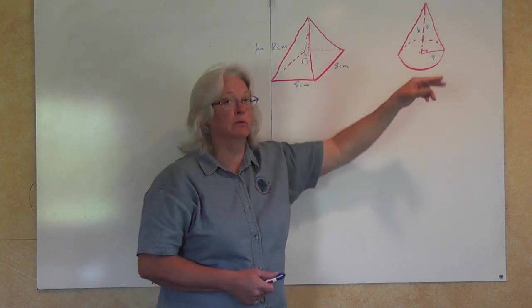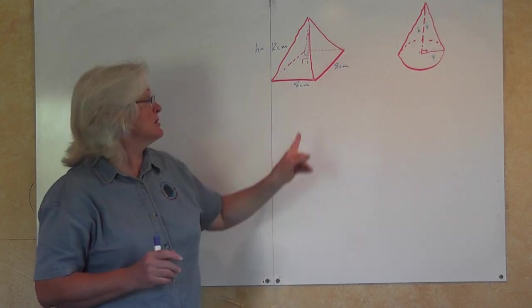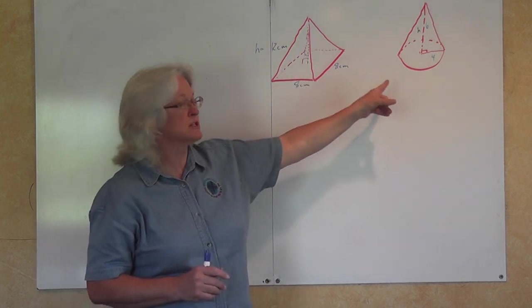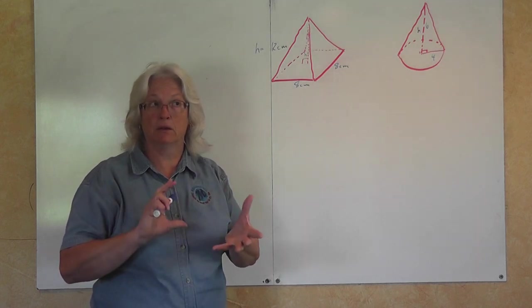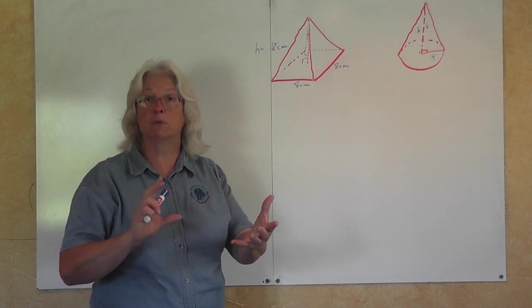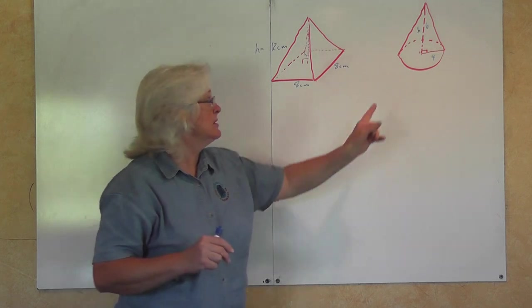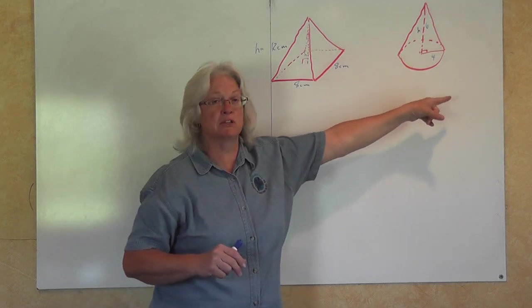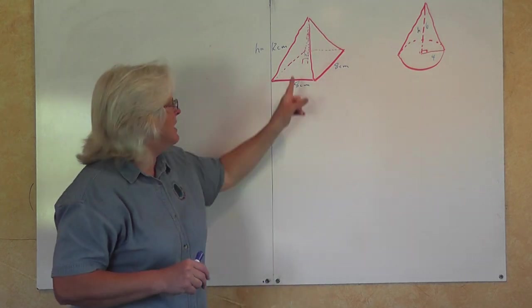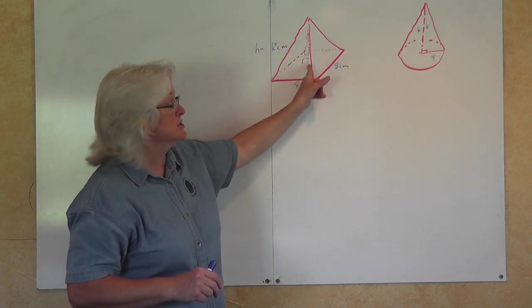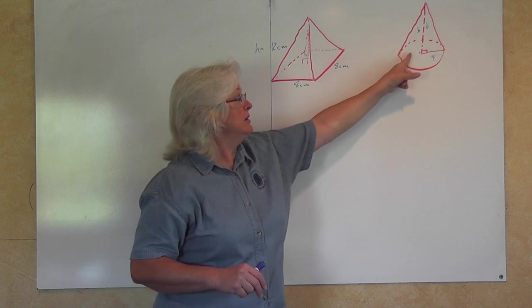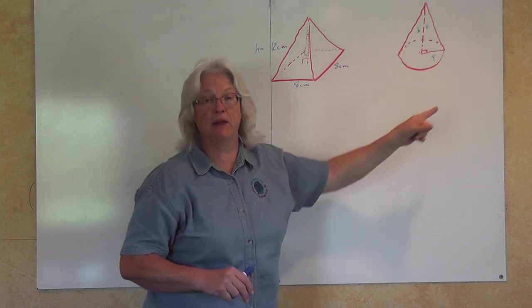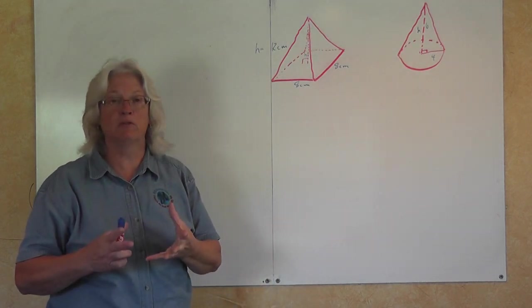So the base of a cone is a circle. You reach down and pull up from the very center of that to the top point. And that's what you have for a cone. And if you think you can see that there's a real connection, a similarity between pyramids and prisms and between cones and cylinders.